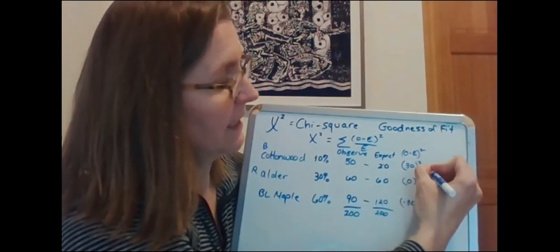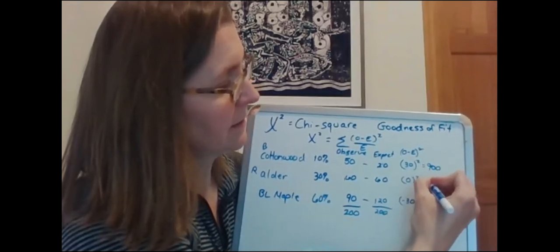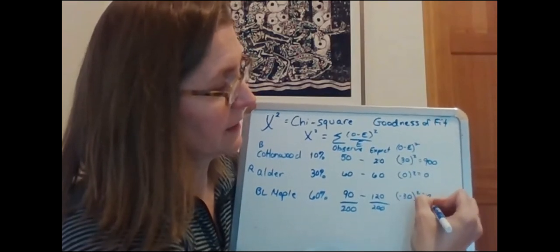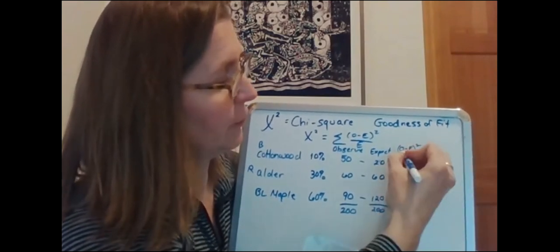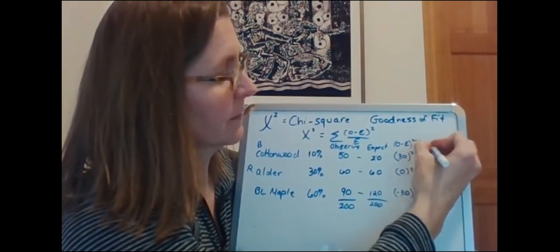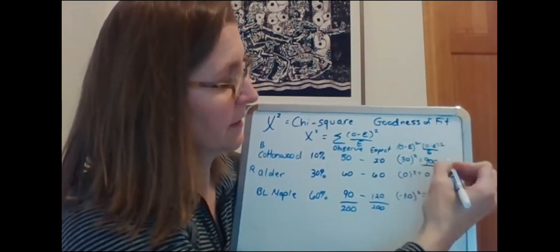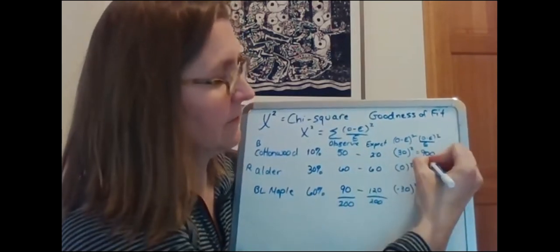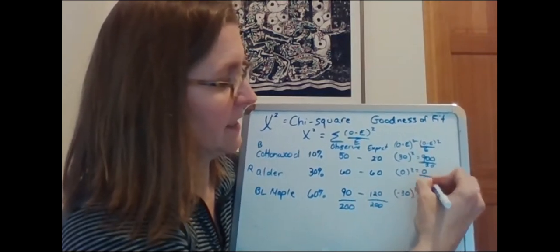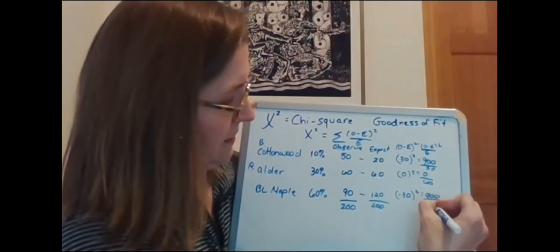And what I get is 30 times 30 is 900. This is going to be 0 and negative 30 times 30 is also 900. So now I have my numerator of my equation right here. Now I want to divide by my expected values so 900 divided by 20, 0 divided by 60, and 900 divided by 120.